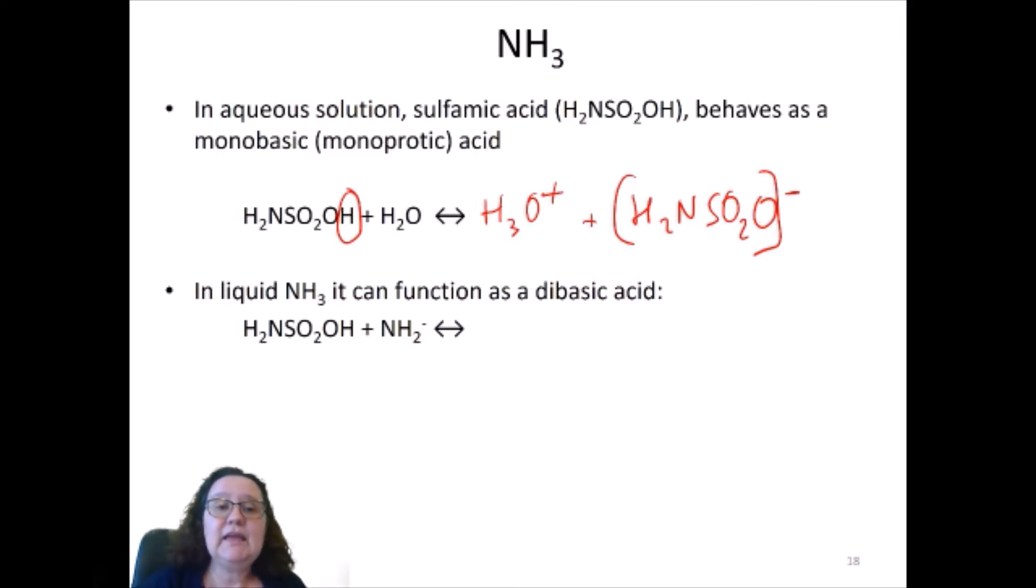However, in liquid ammonia it can function as a dibasic or a diprotic acid. That is because in liquid ammonia there are two hydrogens, potentially three, but the third one doesn't come out, that can be removed. One is this one and the other one is one of these.